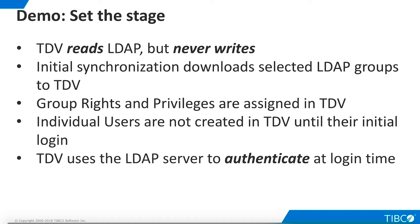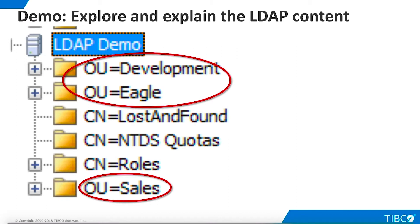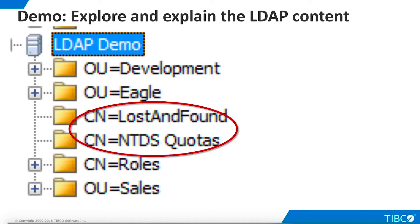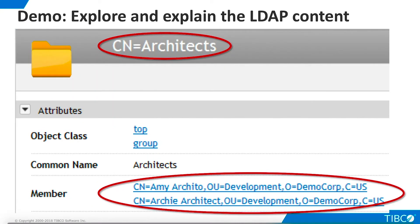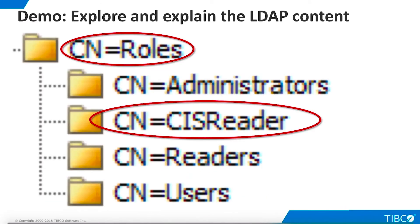As our LDAP browser shows, for this particular LDAP deployment, our TDV users reside in three different organizational units: Development, Eagle, and Sales. These containers are defined by default as part of the Active Directory installation and contain node data. Within each organizational unit, we have defined users and groups, and within each group, we have defined users as members of the group. The roles container is also installed by default and contains various containers for administrative roles. We have also defined a user named TDV Reader, assigned to the group named Readers, which means it can read data from Active Directory but cannot make any changes. We will use TDV Reader as the user that TDV Manager employs to read data from Active Directory.